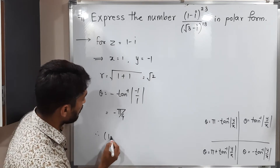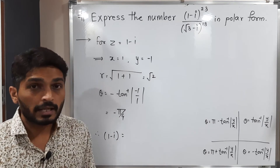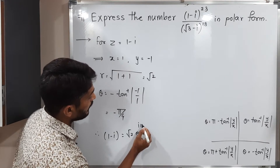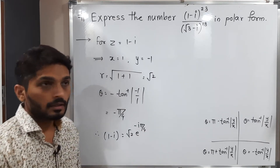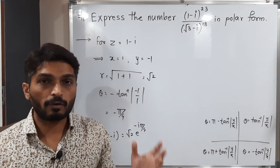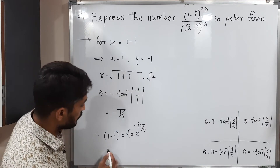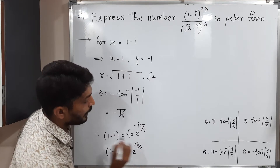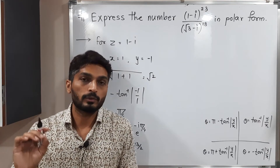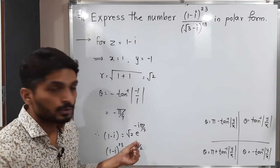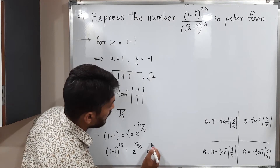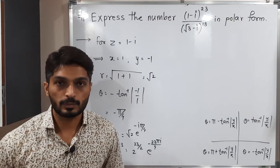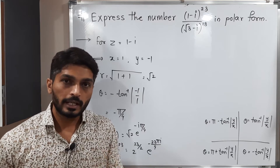Therefore 1 minus i expressed in exponential form is R e raised to i theta, which is root 2 times e raised to i times minus pi by 4. Now they have given a power of 23, so taking the 23rd power of both sides: (1 minus i)^23 equals 2 raised to 23/2 times e raised to minus 23 pi i by 4. This is the value of the numerator expressed in exponential form.